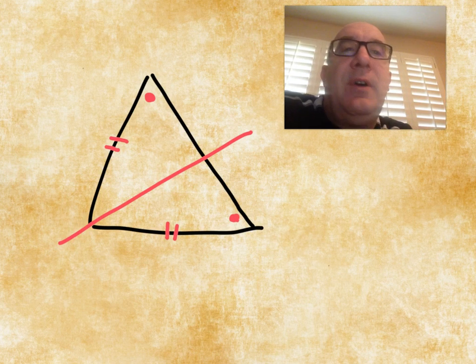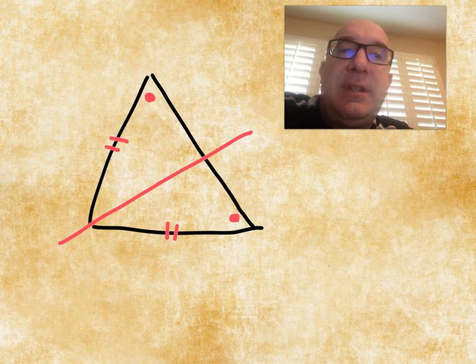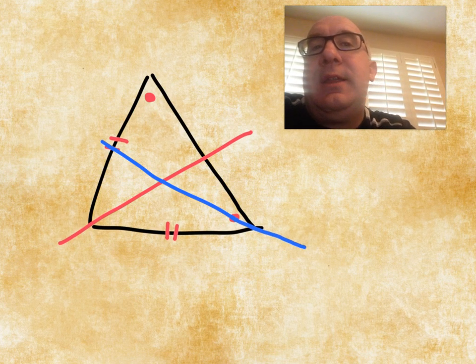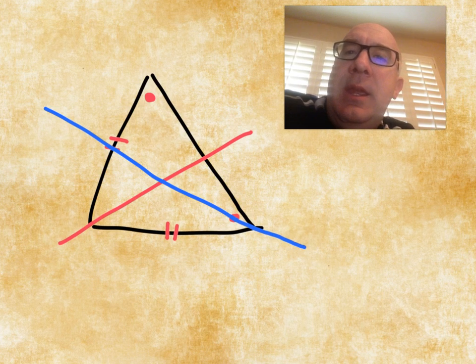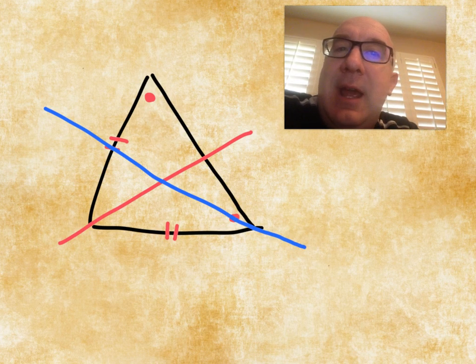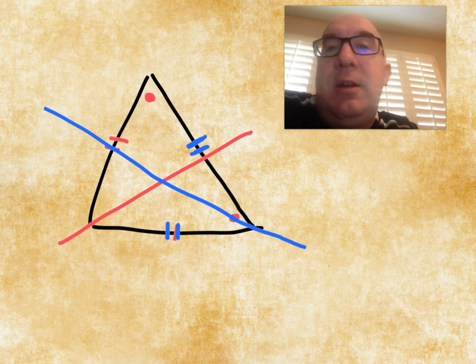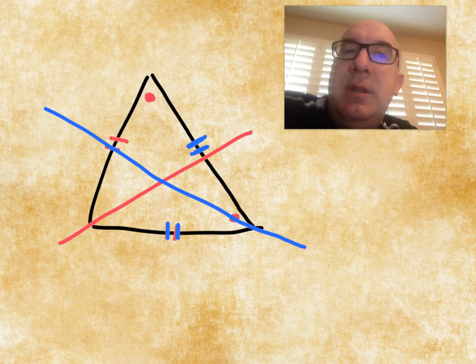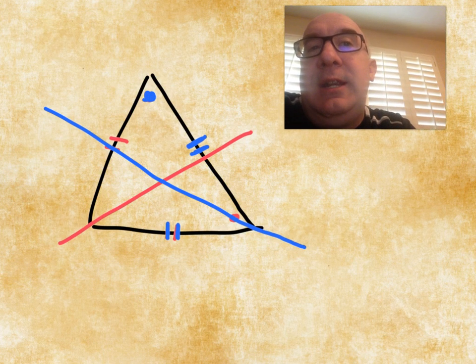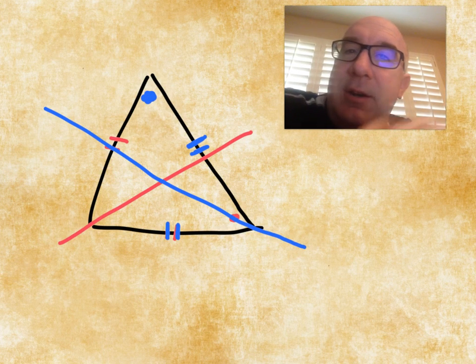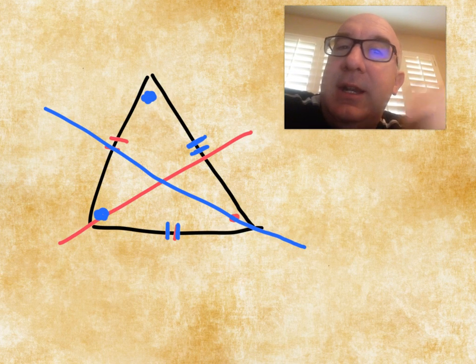If we then felt that there was a second line of symmetry, let's say this one here, it would force the same thing to happen. It would force that this side here, which is two dashes, would have to be the same as this side here, which would also be two dashes. It would also guarantee that this angle here would also be reflected to here.